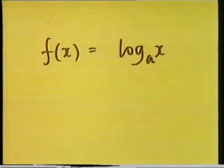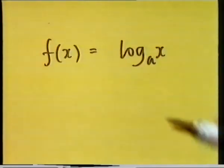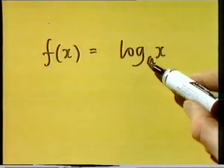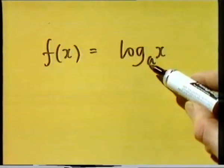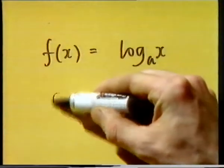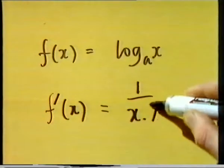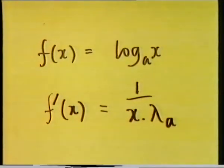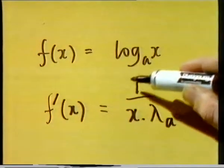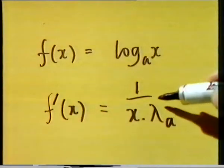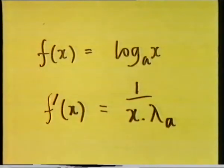Now let's look at the derived function of log to the base a of x. To calculate the derivative of log to the base a of x, we use the fact that it's the inverse function of a to the x in the chain rule. The derived function of log to the base a of x is 1 over x times lambda a. The derived function is very nearly 1 over x — the only difference is this extra factor lambda a underneath.